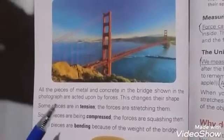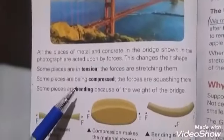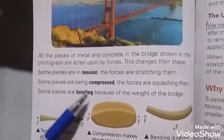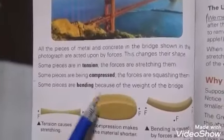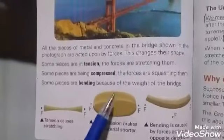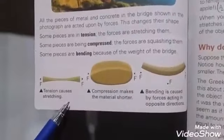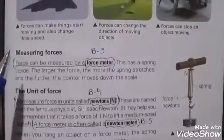This figure shows all the pieces of metal and concrete in the bridge shown in the photograph. These pieces are present in tension, compression, and bending. Tension: the forces are stretching them. Compression: the forces are squashing them. And bending: the weight of the bridge. These are the figures of tension, compression, and bending.